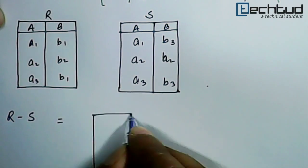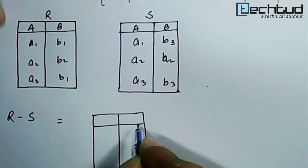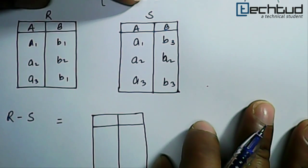It will be equal to, and of course first of all what we have to check is that these two R and S are union compatible, right. They have to be union compatible and you know well what is union compatibility.